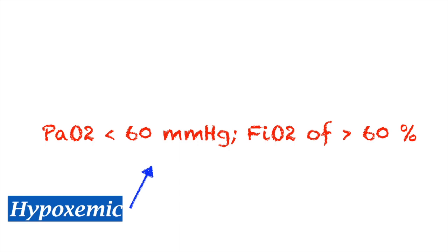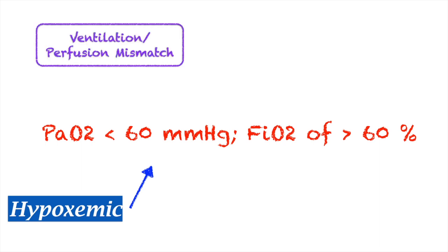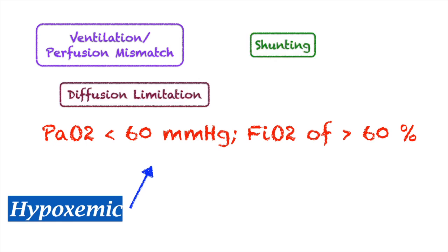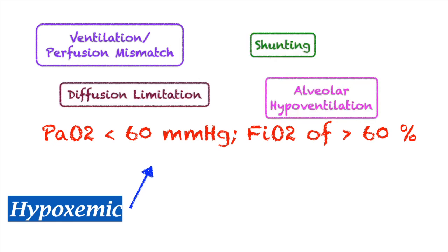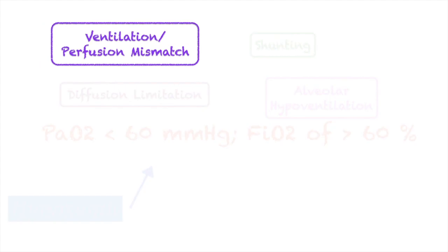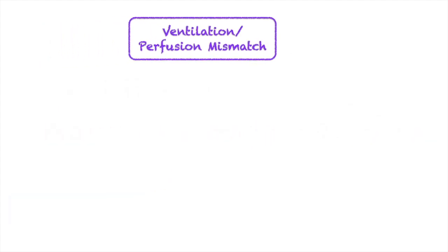There are four major physiologic events in hypoxemic respiratory failure: ventilation-perfusion mismatch, shunting, diffusion limitation, and alveolar hypoventilation. First up: ventilation-perfusion mismatch, also known as the VQ mismatch.